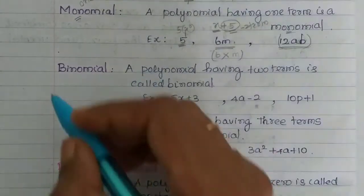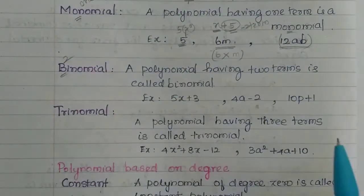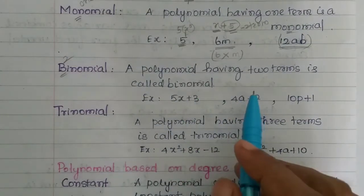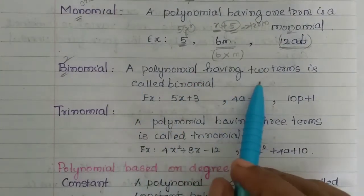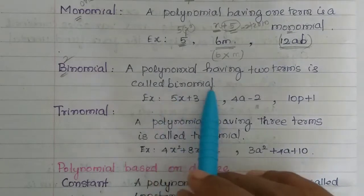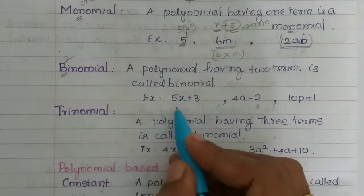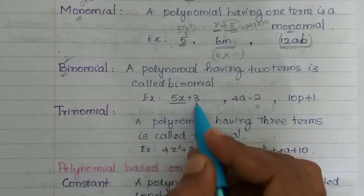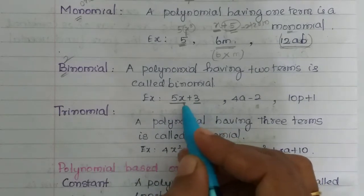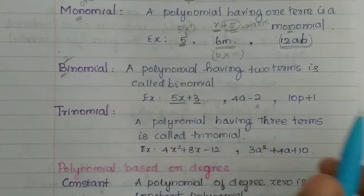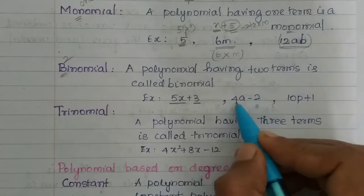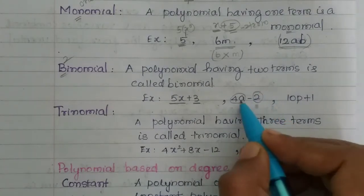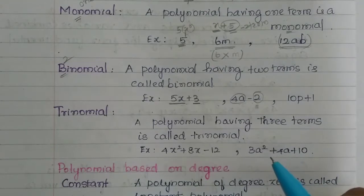Next, binomial. 'Bi' means two — two terms. A polynomial having two terms is called a binomial. For example, 5x plus 3: there is a plus, so there are two terms. With a minus, there are also two terms. So it is called a binomial.